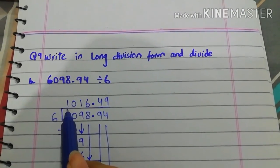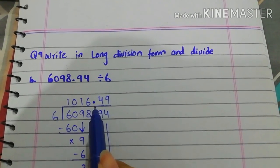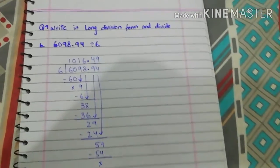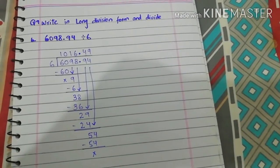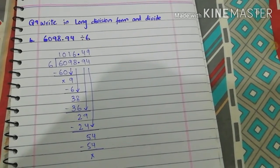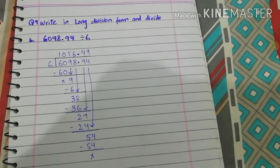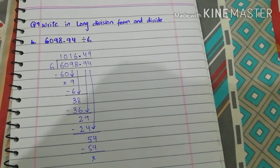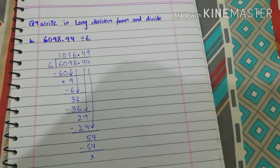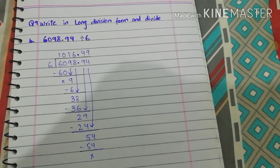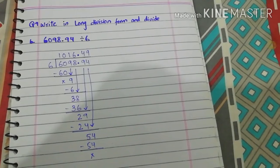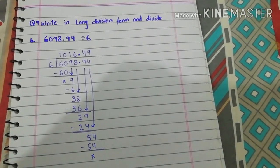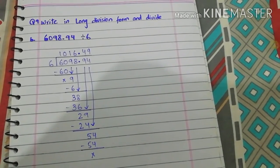So the answer we get is 1016.49. Friends, you will do the remaining parts of question number 9 by yourself. Today we have covered question number 8 and 9 of exercise 4B, page 101. Take care of yourself. Allah Hafiz.